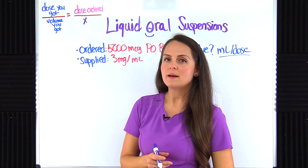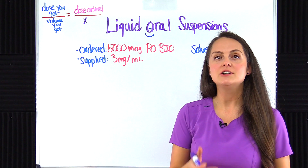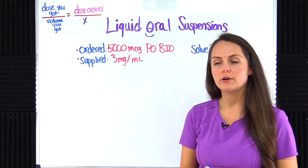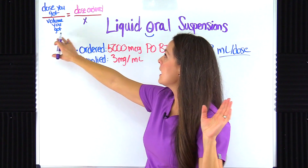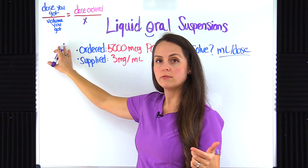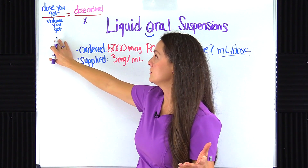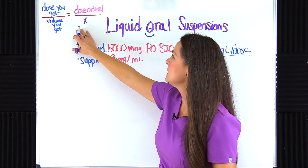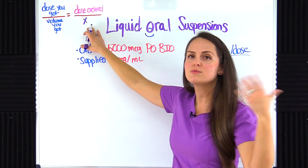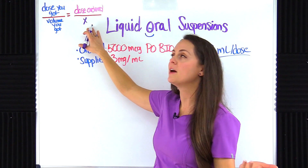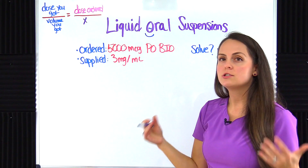When you're setting up ratio and proportions, you're creating ratios that in the end should be proportionate — hence equal to each other. You're going to create a known ratio and an unknown ratio. To create your known ratio you need the dose you got over the volume you got, and that should be equal to the dose ordered over x — that's what you don't know, and it's what you are going to administer.